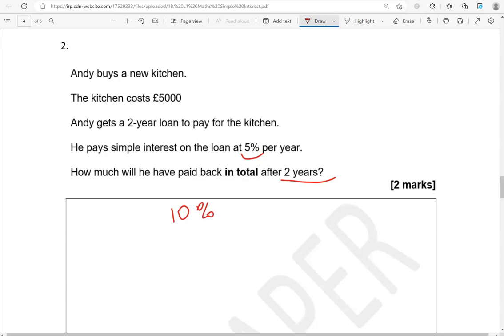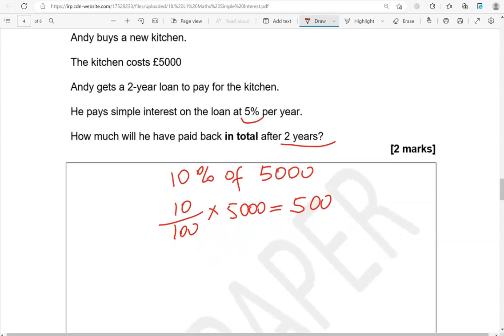So we're working out 10% of 5,000 pounds. Now, you know that it's just 500, knocking off a zero. Or you could go 10%, so 10 out of 100, of 5,000. Using a calculator, which still gives you the same answer. 500 pounds. So, again, we're working out the total amount. So we're going to add that on top of the 5,000, which is 5,500 pounds.